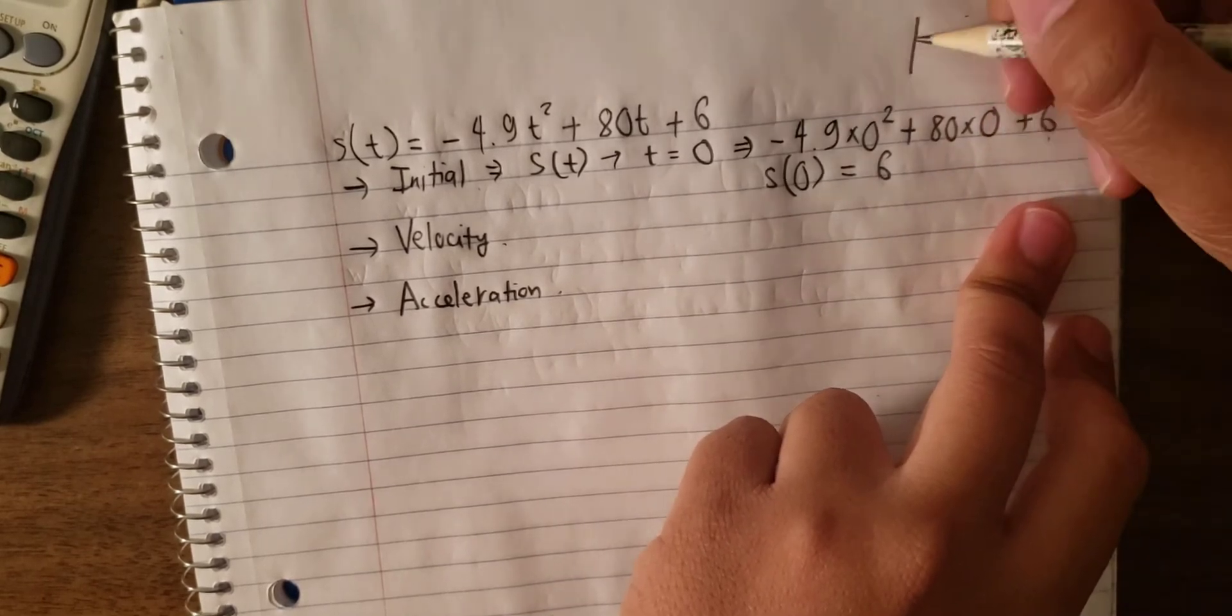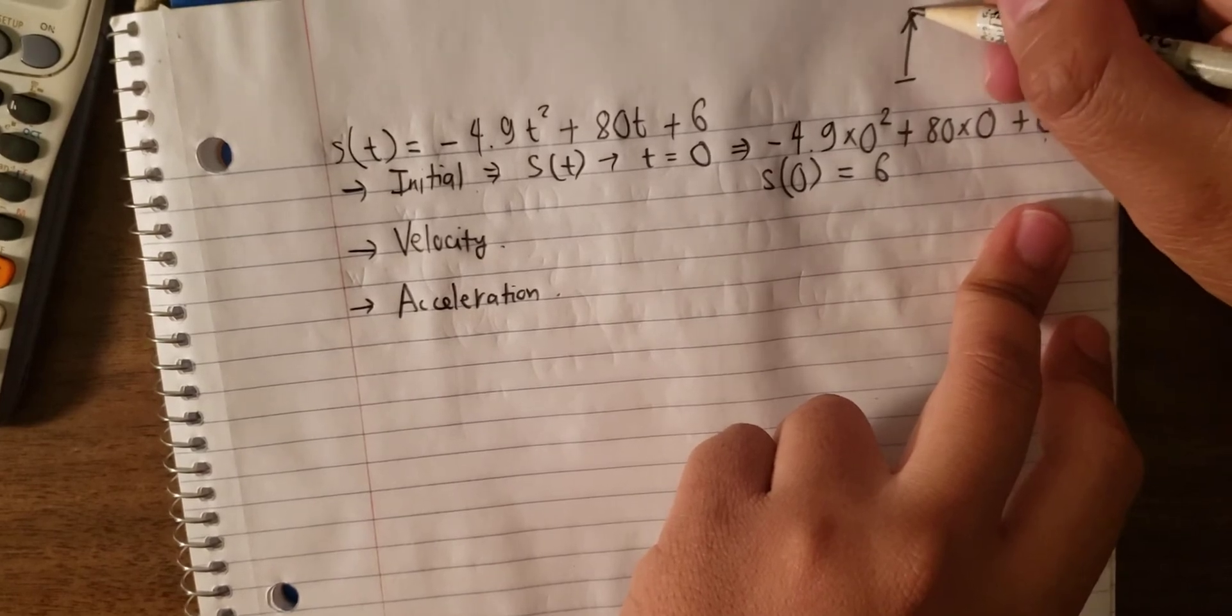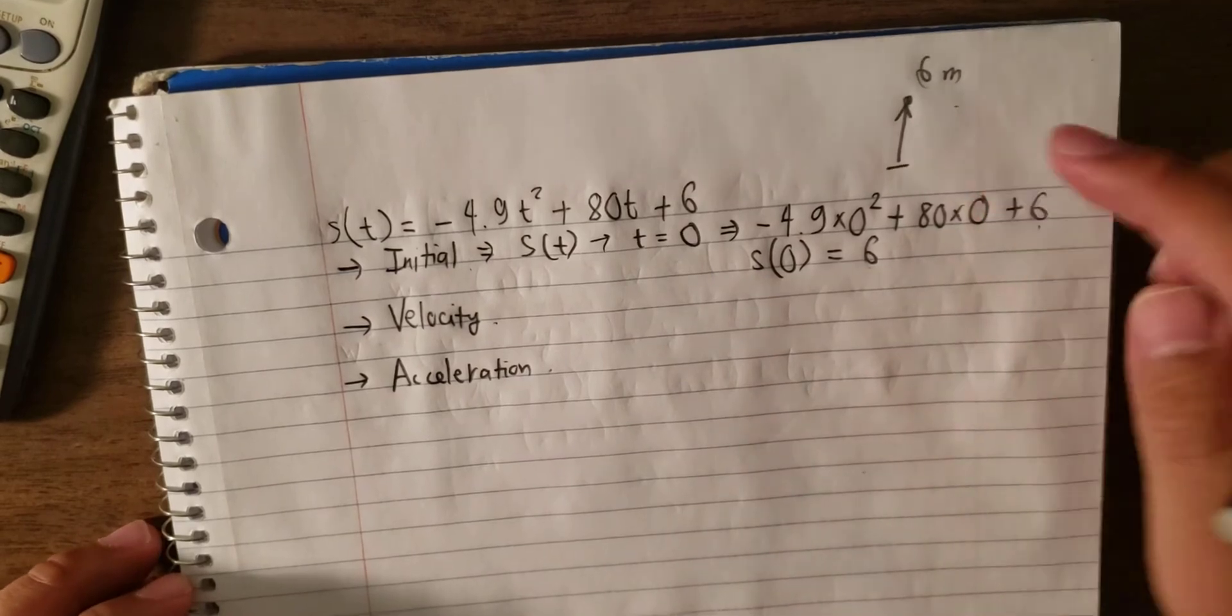It means that at the beginning, the point in this location is on the 6 meter. That's about initial location, so that's the first one we need to learn about.